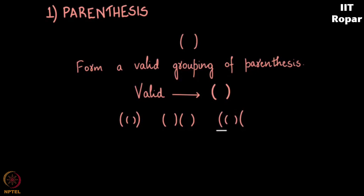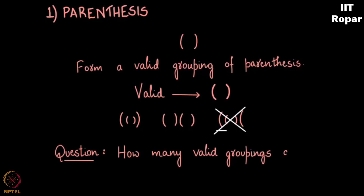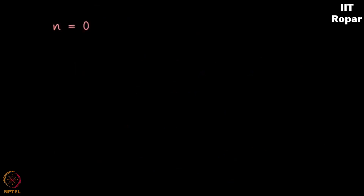The question is: how many groupings are there for each value of n? If n is 0, that is we do not have any parentheses, how many ways can we have this? Just one way. This might seem confusing — I say there are no parentheses and then I say one way — but when n is 0 we say there is one way of having no parentheses.